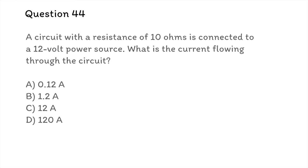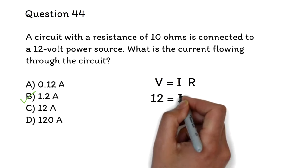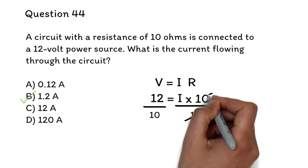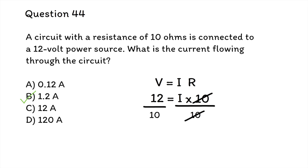Question 44: A circuit with a resistance of 10 ohms is connected to a 12-volt power source. What is the current flowing through the circuit? A. 0.12 amperes, B. 1.2 amperes, C. 12 amperes, D. 120 amperes. The correct answer is B, 1.2 amperes. We use Ohm's law: V = IR, where V is voltage, I is current, and R is resistance. This formula will be given to you. Voltage = 12, resistance = 10. Solving for I: divide both sides by 10 → I = 12/10 = 1.2 amperes.